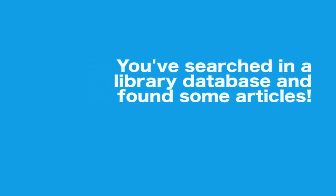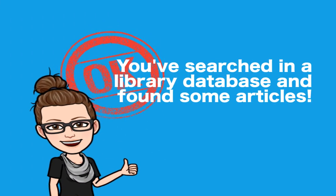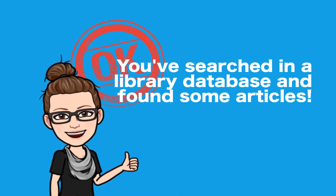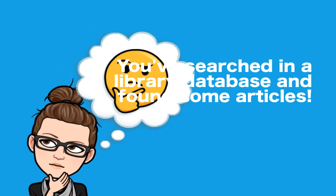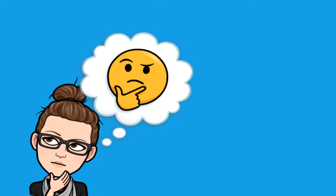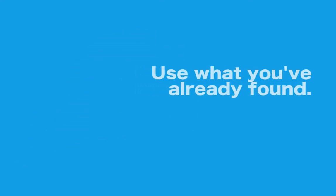Say you've been doing some searching in a library database and you've found a few articles that are exactly perfect for the kind of research that you're doing. You might be wondering, how can I find other articles that are along the same lines of research? Well, you can use the articles that you've initially found as a jumping-off point to find additional information that might be helpful for your research. This video will show you how.